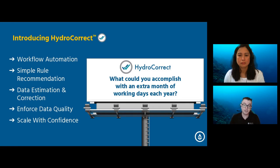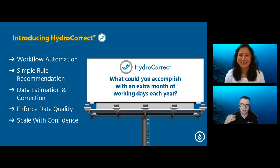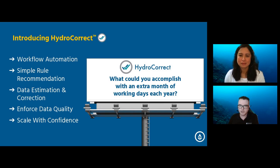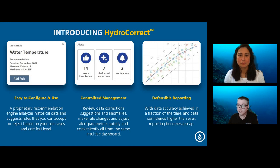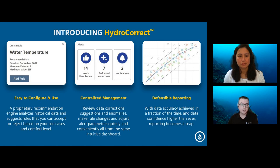Think about what you could accomplish with an extra month of working days each year — and that's just the average. The main use cases our pilot program customers experienced include: easy configuration via a proprietary recommendation engine that analyzes historical data and suggests rules; centralized management where you can review data corrections, suggestions, and anomalies, make rule changes, and adjust alert parameters all from a single dashboard.